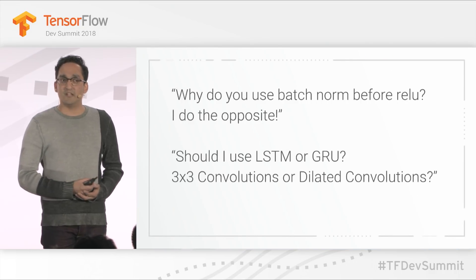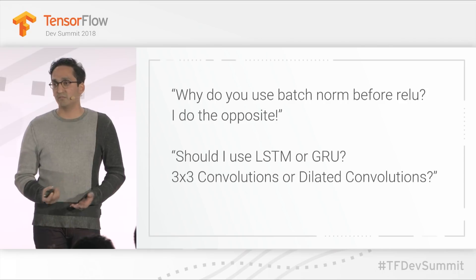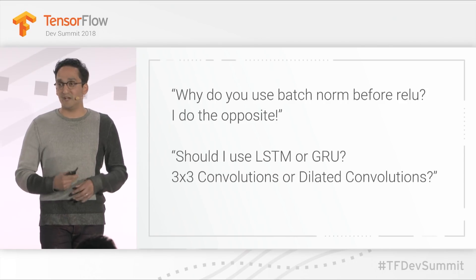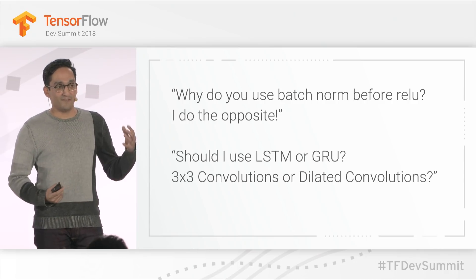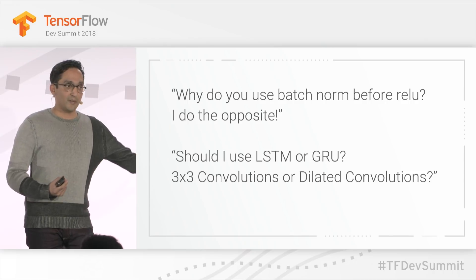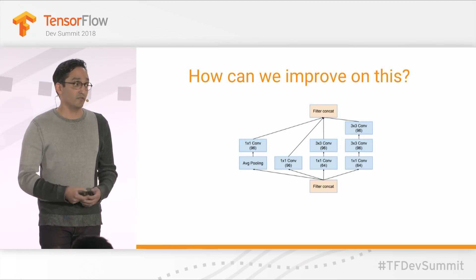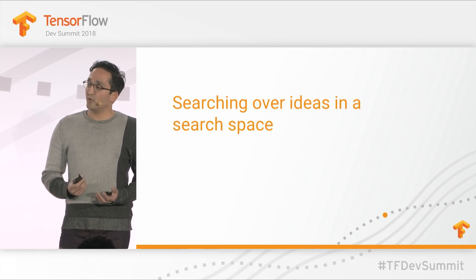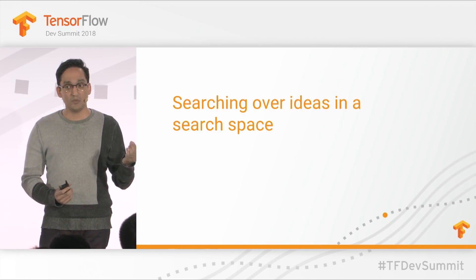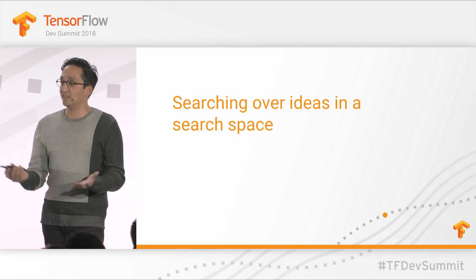Now let's ask more complicated questions that people often ask as well. Why do you use batch norm before ReLU? I switch the order and it seems to work better. Or if you're training a completely new model, should I use one type of subarchitecture or another? If you think about it, these questions aren't really that different from hyperparameter settings. If we think of hyperparameter optimization as searching over a specific domain of ideas, then maybe we can treat architectural decisions as another form of searching over a domain of ideas.